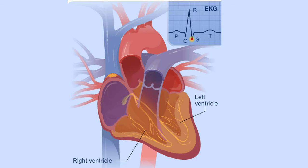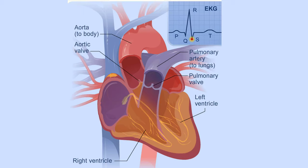The contraction of your heart's right ventricle pushes blood through the pulmonary valve to your lungs. The contraction of your heart's left ventricle pushes blood through the aortic valve to the rest of your body.